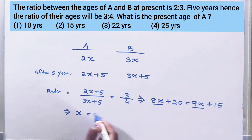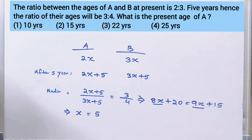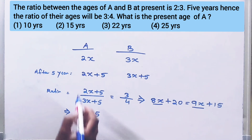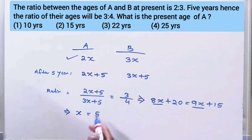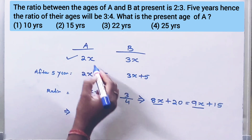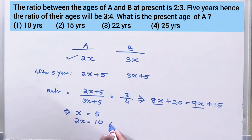That implies x is equal to 5. Then what is the present age of A? A equals 2x equals 2 times 5, so A is equal to 10.